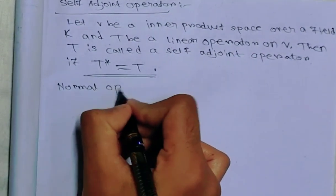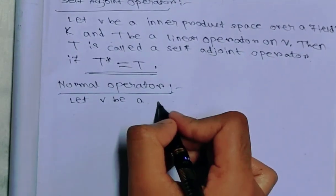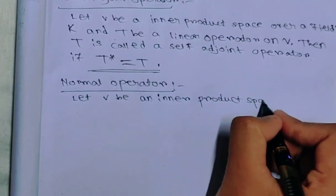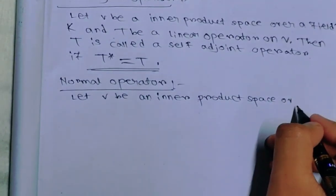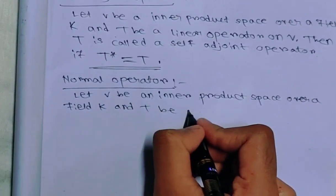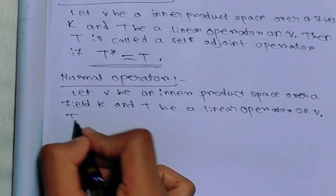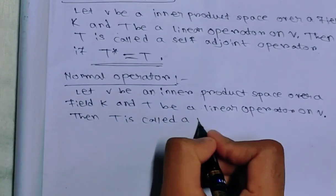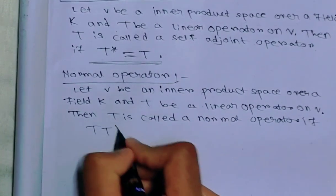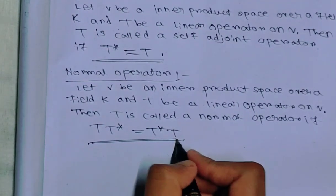Normal operator. What is a normal operator? Let V be an inner product space over a field K, and let T be a linear operator on V. Then T is called a normal operator if T times T star equals T star times T. So we just have to show that T T star equals T star T.